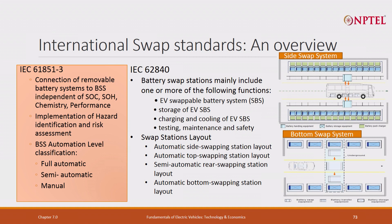There are some attempts to define international swapping standards, still very much in infancy. There is IEC 61851-3, a correction or removal battery system for BSS. It is made independent of state of charge, state of health, chemistry, and performance. Implementation of hazard identification and risk assessment. Three kinds are defined: full automatic, semi-automatic, and manual. There is also a GB/T 682400 standard.